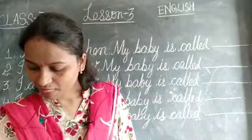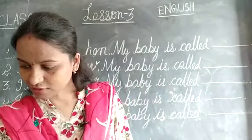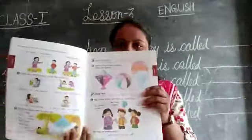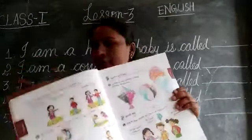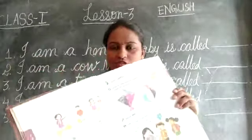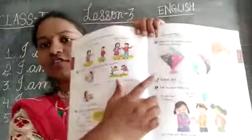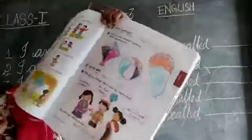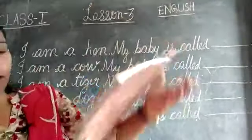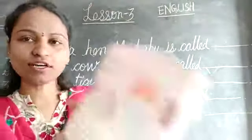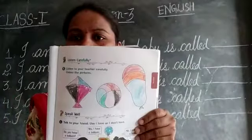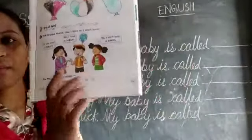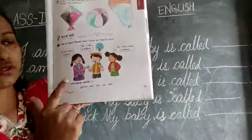open page number 30 or 31. I have given you homework — page number 31 — to draw the colourful pictures. I hope you have drawn. Now we are going to do this.